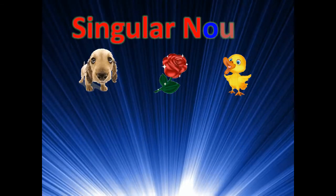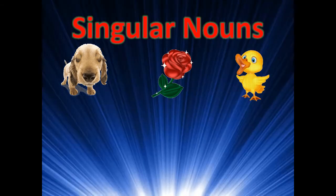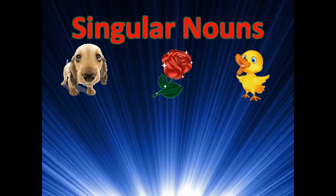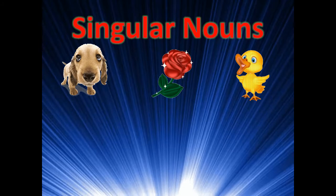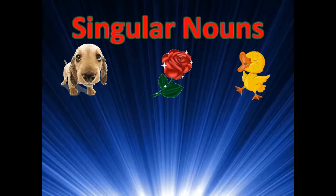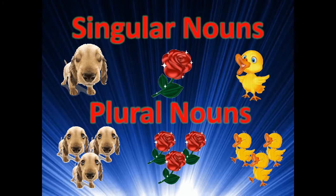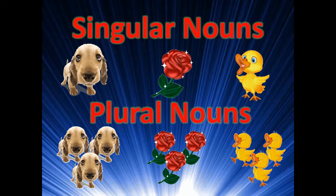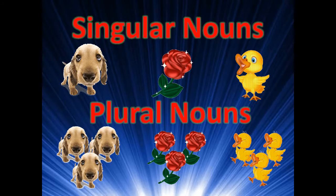A singular noun tells us about one person, one animal, one place, or one thing. A plural noun tells us about two or more people, animals, places, or things.